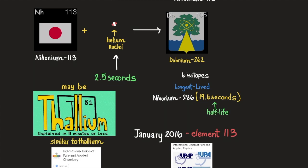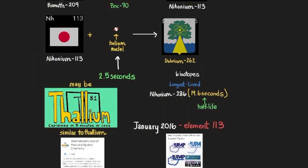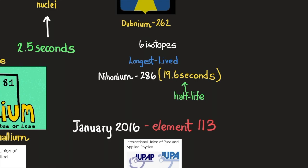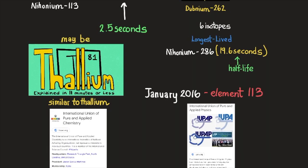Its chemical properties may be similar to those of thallium. The element has six isotopes with known and confirmed half-lives, the longest lived of which is nihonium 286, with a half-life of 19.6 seconds. Most of these radioactive isotopes were not directly synthesized, but occurred as decay products.